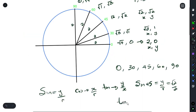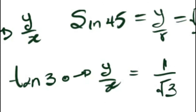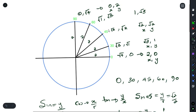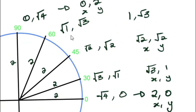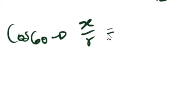If I need to find tan 30, tan is y over x. I go to 30 on the wheel and I see y = 1 and x = root 3, so the answer is 1 over root 3. For cos 60, cos is x over r. On the line for 60°, x = 1 and r = 2, so cos 60 equals 1 over 2.